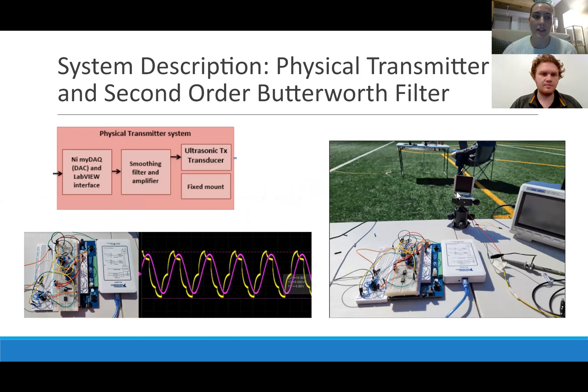The output of the NI myDAQ is choppy, so it is sent through a second order Butterworth filter, which processes and amplifies the signal. The signal is then transmitted by a 4x4 transmitter array to generate a beam of ultrasonic waves.